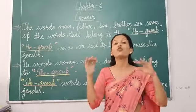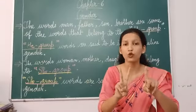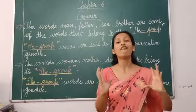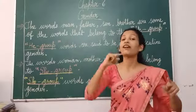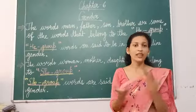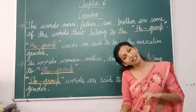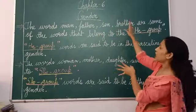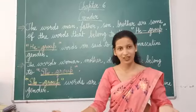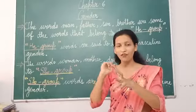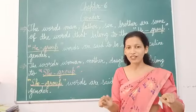So this gender has been divided into two parts. One is masculine and the other one is feminine. These masculine gender and feminine gender are formed by two groups — the he group and the she group. He group words — father, brother, uncle — are said to be in the masculine gender. So man, father, son, brother all form the he group, and this he group is said to be the masculine gender.